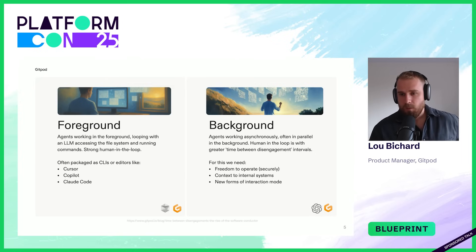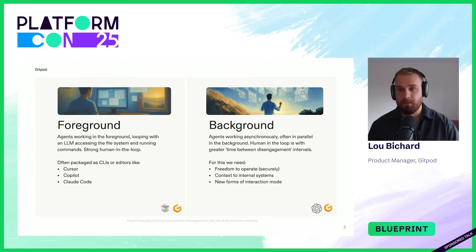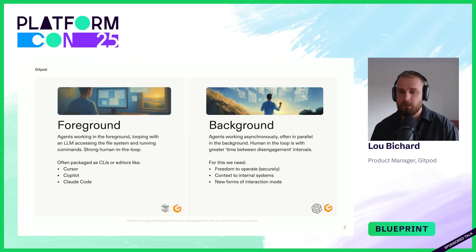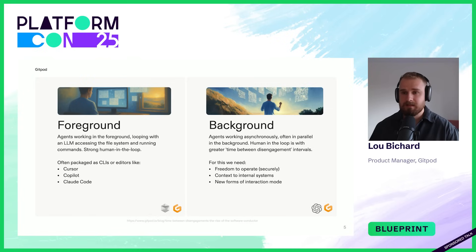When it comes to developer productivity and AI, we're seeing an emergence of two types of modalities: foreground and background. Foreground agents run in your editor or CLI on your machine, with a strong amount of human-in-the-loop interaction — the agent runs but requests authorization from the human for specific actions. But now we're seeing background agents: they work in the background, run in parallel, run asynchronously, and can run for a long period of time. To unlock that we need freedom to operate in a secure environment, context from internal systems, and eventually new forms of interaction as agents become more autonomous.